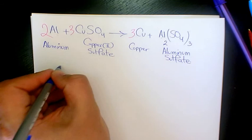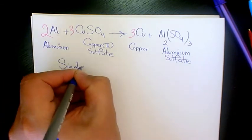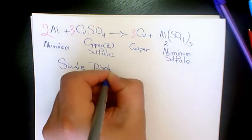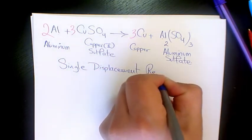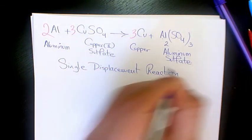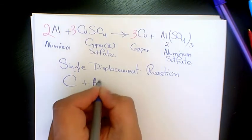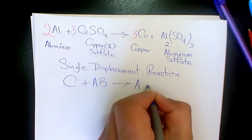single displacement reaction. Any type of reaction that we have C plus AB and gives you AC plus B is called single displacement reaction.